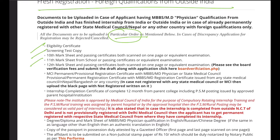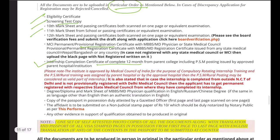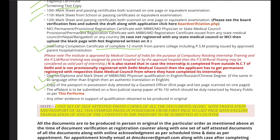The documents required include: eligibility certificate, screening test copy, 10th, 11th, and 12th marksheets, MCI permanent or provisional certificate, completion certificate, degree or diploma copy, passport copy, and your payment journal. All must be arranged in order.